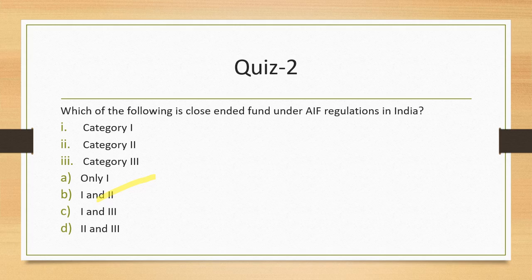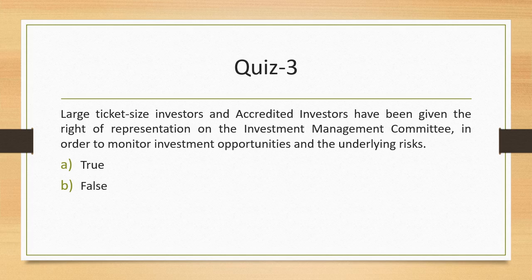Question 3: Large ticket size investors and accredited investors have been given the right of representation on the investment management committee of alternative investment funds in order to monitor investment opportunities and underlying risks. If you are a large ticket size investor or an accredited investor, you can be part of the investment committee just to take care of various risks. Risk management will be done by the fund itself, but you will be able to monitor. This statement is true.